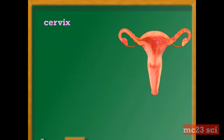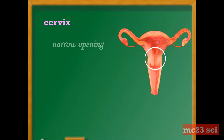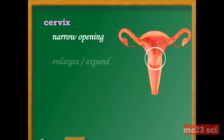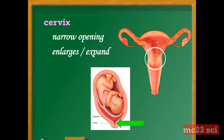Next is the cervix. This is a narrow opening between the uterus and the vagina. It enlarges and expands to let the fetus pass during birth.